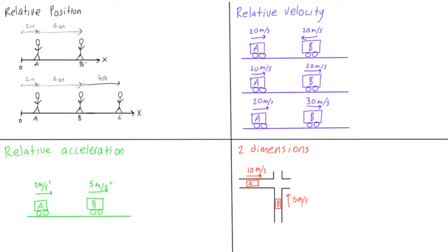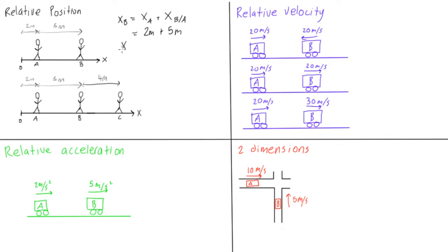If we want to describe how far away person B is from the origin, we'd say he's five meters away from person A, and person A is two meters away from the origin, so he's seven meters away from the origin. If we want to describe his position, we say x of B equals the position of A plus the position of B relative to A — written as x subscript B/A. So the position of A is two meters, B is five meters from A, giving us seven meters total.